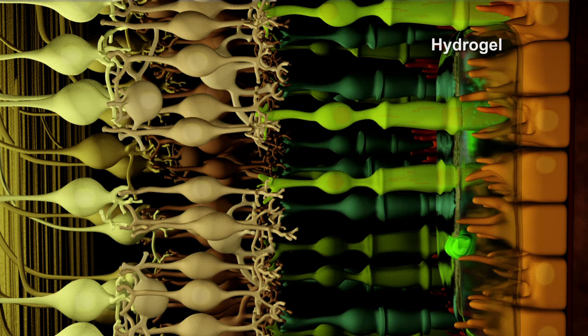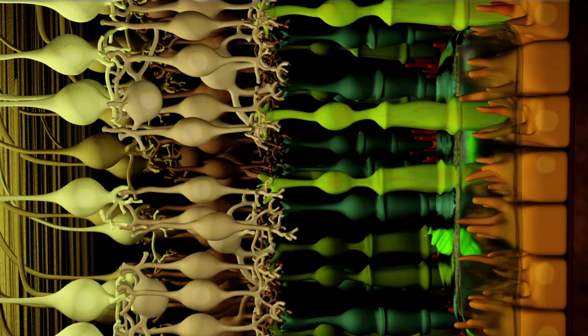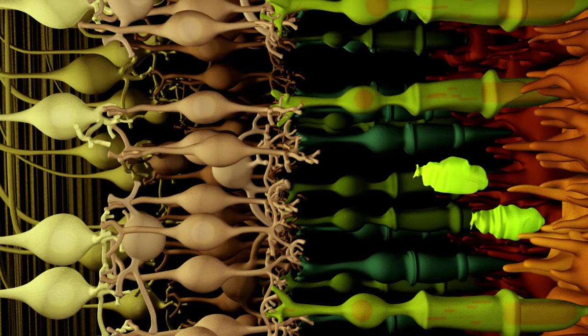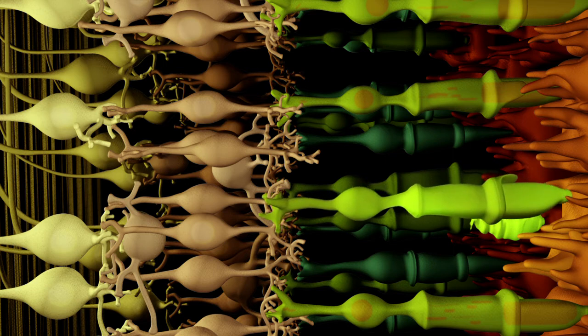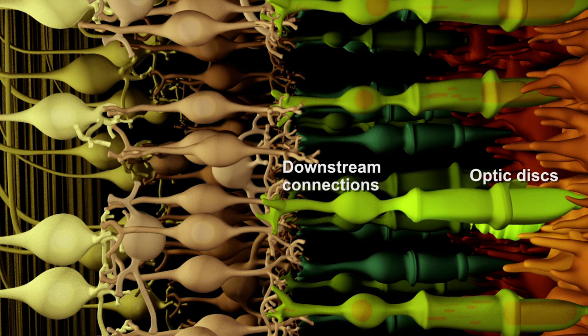The hydrogel is biodegradable and disappears after 7 days. To restore damaged vision, the cells have to complete the transformation into mature photoreceptors by producing optic discs to receive light, establish connections with existing downstream retinal cells, and transmit signal information.